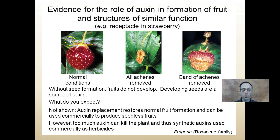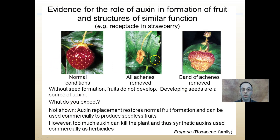Here's further evidence of the role of auxin in fruit formation: we see our normal strawberry, then with all seeds removed. In a very interesting trial, a band of seeds is removed at the central equator point — the fruit below that point does not develop normally, but the fruit above it does. So without seed formation, fruits do not develop. Developing seeds are a source of auxin, demonstrating the dependence of fruit development on auxin.